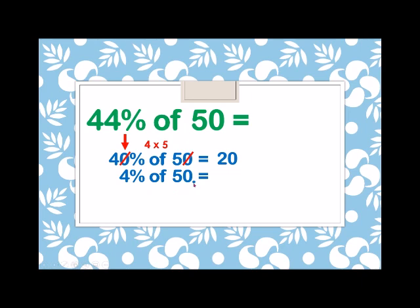And the 4% of 50, where 50, we move the decimal point to the left two times. So, we have 4 times 0.5 which is equals to 2. Adding these two numbers, we have 22. So, the 44% of 50 is equals to 22.